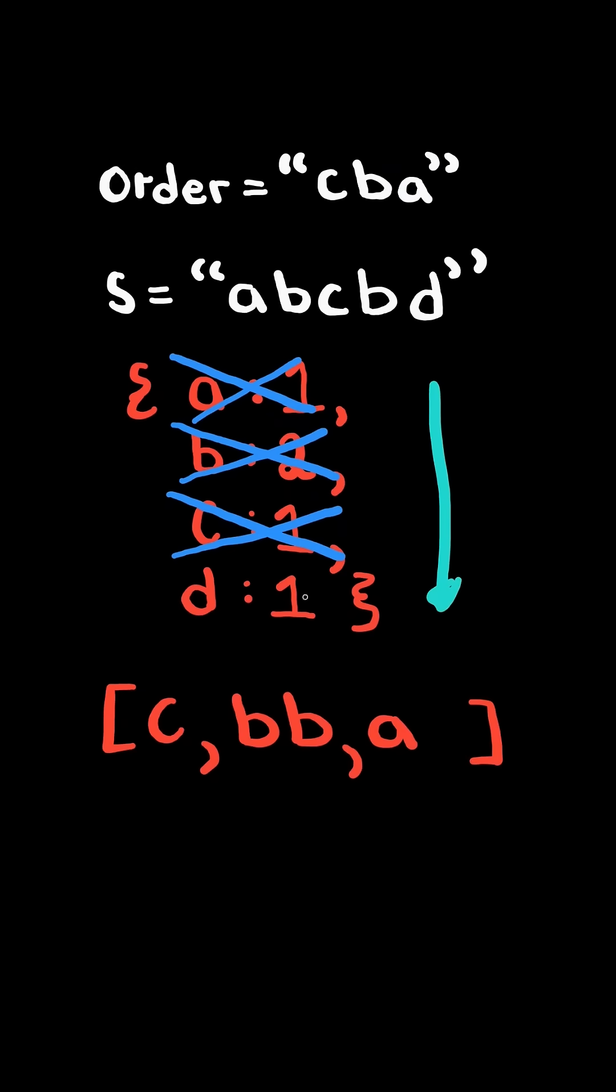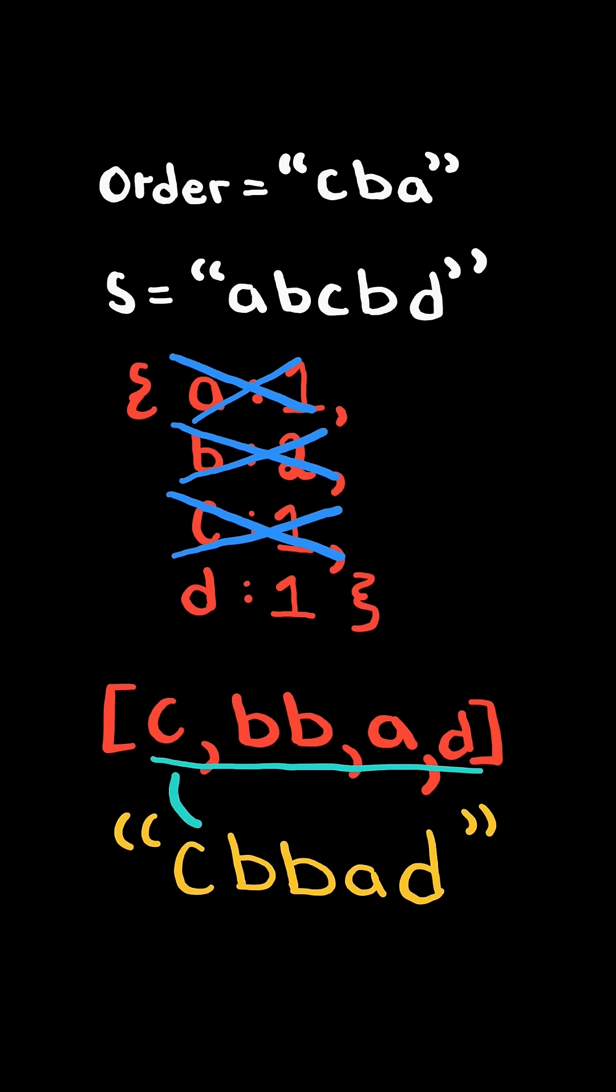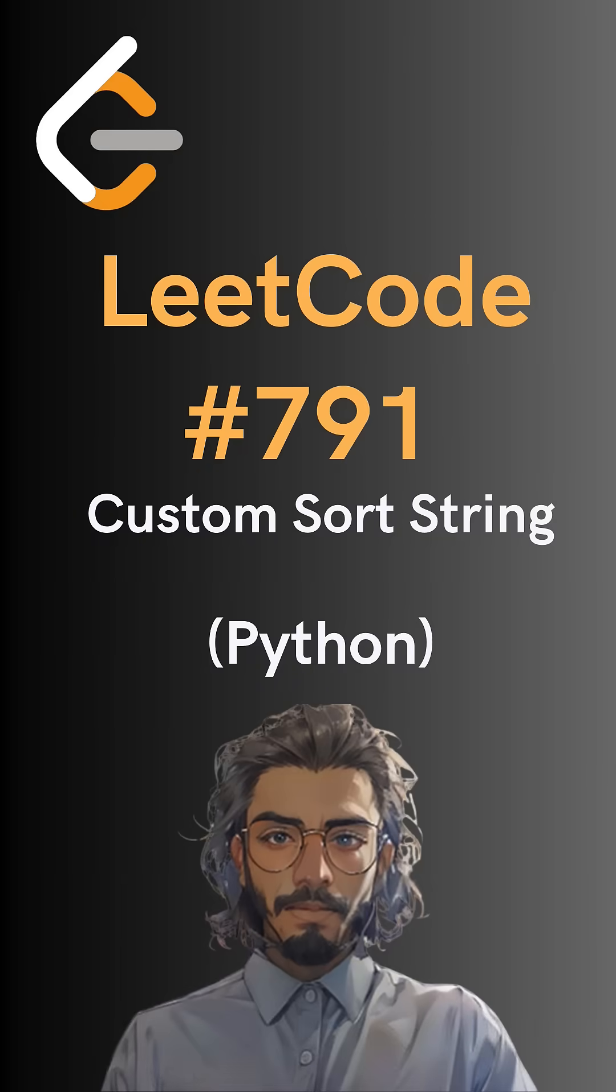We then iterate through the remaining hash map and append the character times its count. Finally, at the end, we join the characters together and return the result. And here is the code to do so. Please like and follow for more.